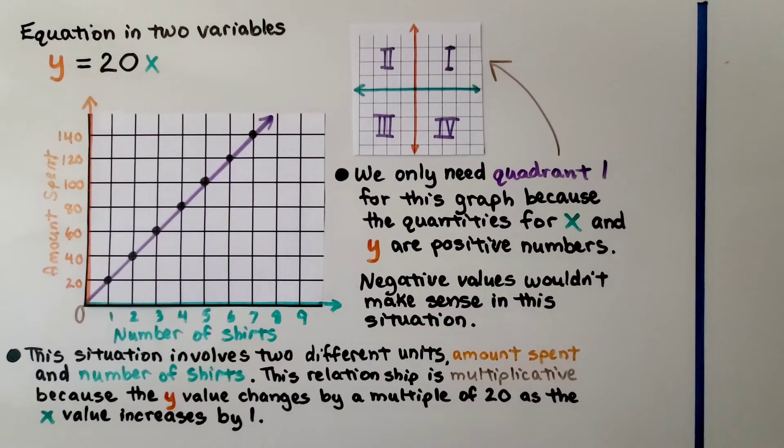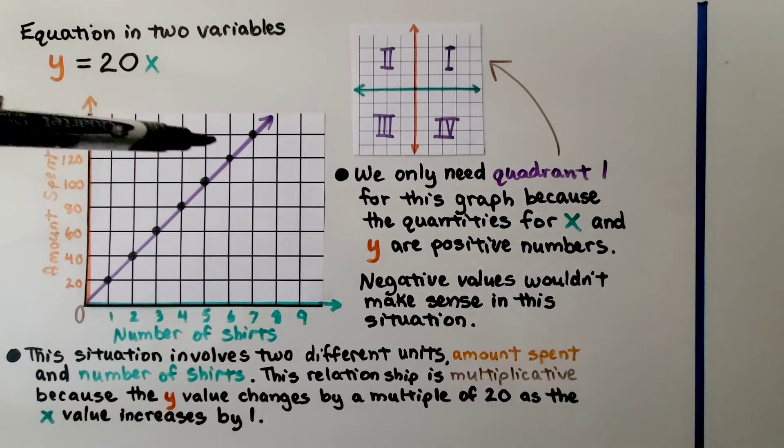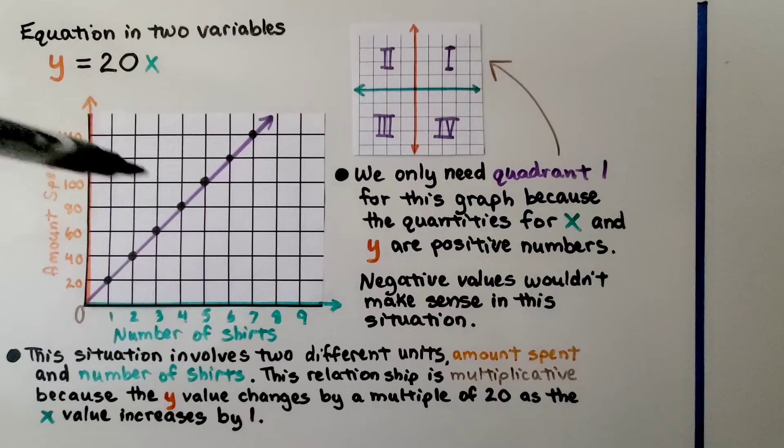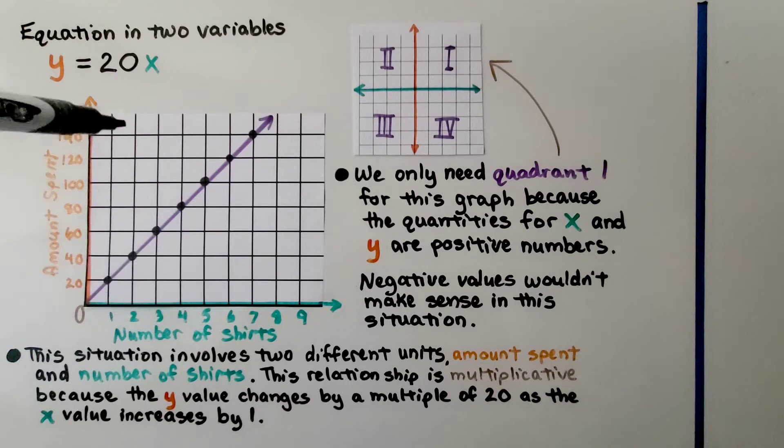We have an equation in two variables. y is equal to 20x. And you notice this is only one quadrant. This is the first quadrant. It's quadrant 1 up here in the corner. We only need quadrant 1 for this graph because the quantities for x and y are positive numbers. Negative values wouldn't make sense in this situation.